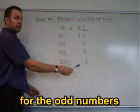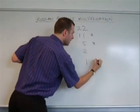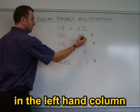Next, we're looking at this column for all the odd numbers. Then we just finally need to add together the corresponding numbers in the left-hand column.